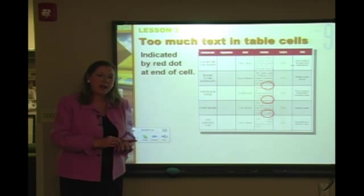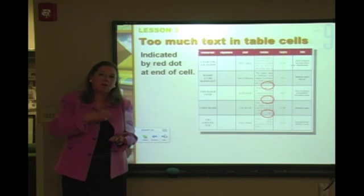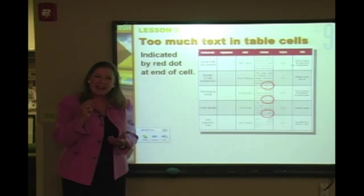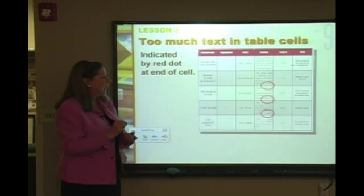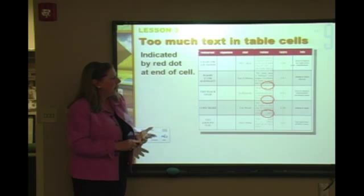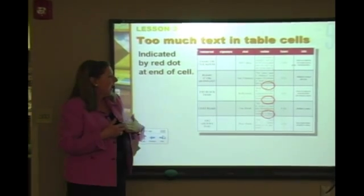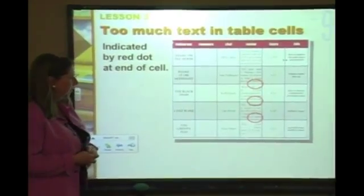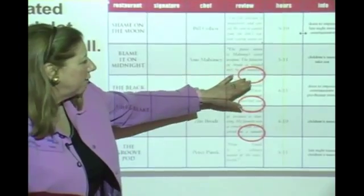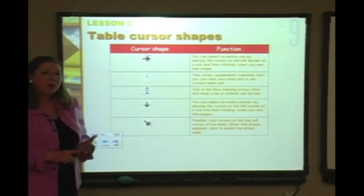One important reminder: in a regular text box, an overset text indicator shows wrapped-up copy. In a table you don't get that exactly — instead you'll see a small red triangle indicating there's still copy that needs to be revealed. To fix it, use the text tool to make the frame a little bigger.